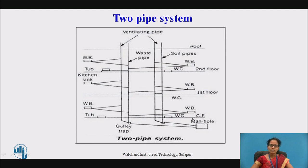These are the different floor levels — ground floor, first floor, and second floor. For these two separate pipes, a ventilating pipe is provided. This system consists of four pipes and is found to be costly compared to other systems. In modern multi-storied buildings, the one pipe system is more conventional than the two pipe system. However, the two pipe system is considered the most acceptable method.